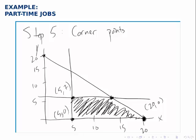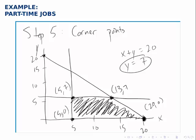This fourth point we'll find by solving the system of equations: x plus y equals 20 and y equals 7. That's a fairly straightforward system to solve — we're given half the answer and can simply substitute into the first equation to find x. If y is 7, then x plus 7 equals 20, so x has to be 13. So we have the point (13, 7). Those are the coordinates of the four corner points, so we've found and labeled them all.